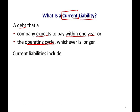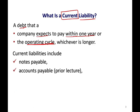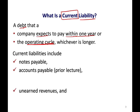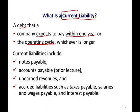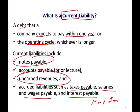What are some examples of current liabilities? It could be notes — basically a short-term loan less than a year — accounts payable, which we looked at in a prior chapter when you buy goods and services on account, unearned revenues, and accrued liabilities. We looked at those when we did adjustments, such as taxes payable, salaries and wages payable, interest payable, and many others. In this session, we're going to focus on notes payable and unearned revenue, because those are two accounts we did not cover heavily in prior chapters, especially notes payable.